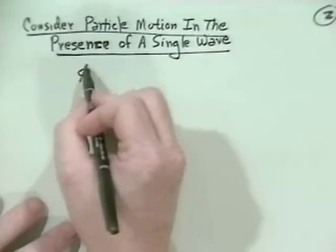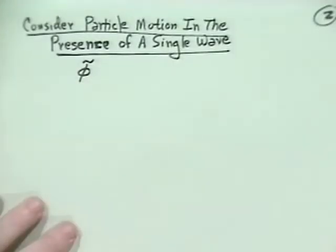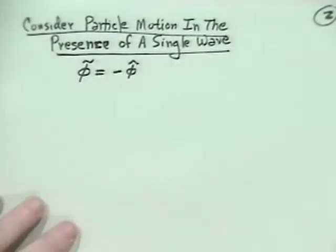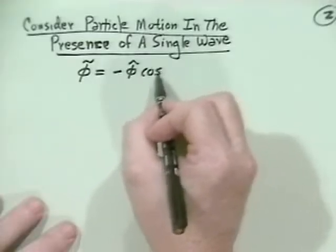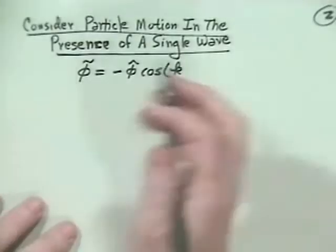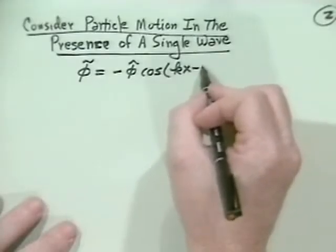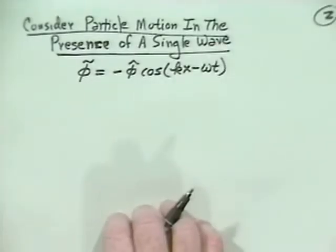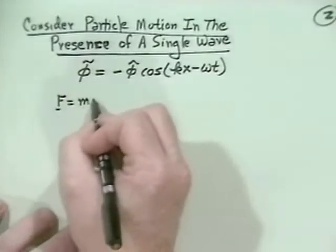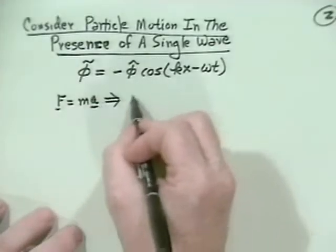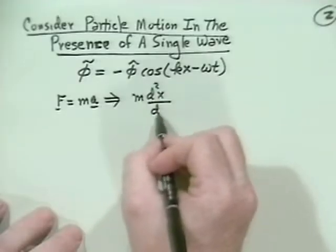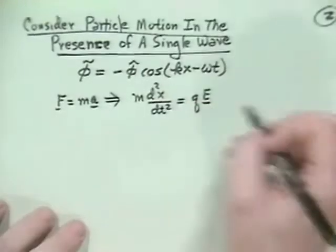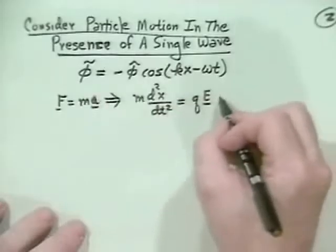We think of a perturbation potential — doing electrostatics here. I choose it in a very special way: minus phi-hat (the amplitude) times cosine(kx − ωt). Newton's law, F = ma, gives us: mass times acceleration, d²x/dt², equals q times the electric field. The electric field is minus grad phi, so this is minus q grad phi-tilde.